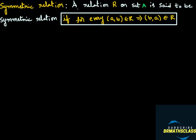You see here — a relation R on set A is said to be symmetric relation. R is a relation on set A, and that relation is said to be symmetric relation. For every ordered pair which is there in R, for every ordered pair (A, B) belonging to R, if ordered pair (B, A) is also there in the relation, then we say that that relation is a symmetric relation.